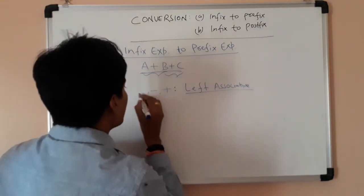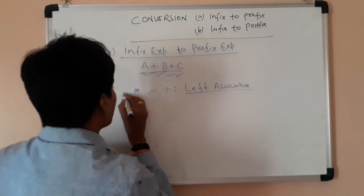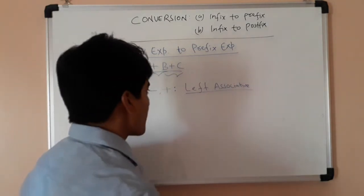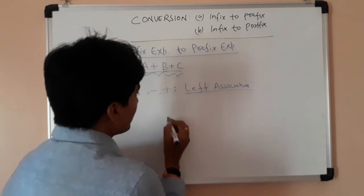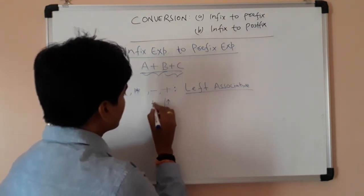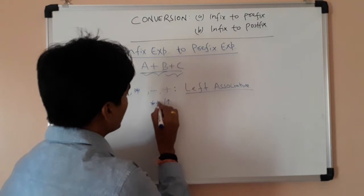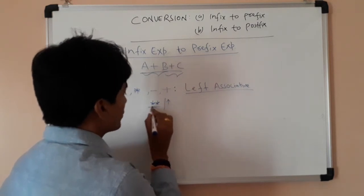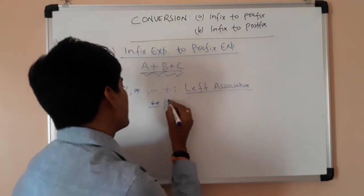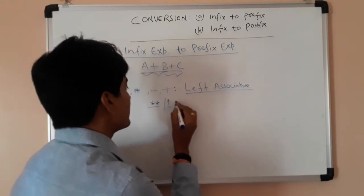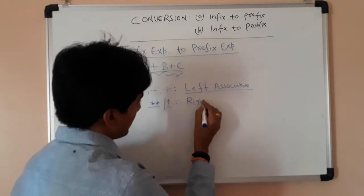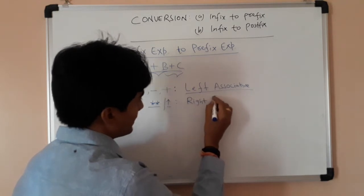Minus is also left associative, star (multiplication) is also left associative, and division is also left associative. But in the case of power — some authors denote it as two stars and some use an arrow sign — power is right associative.